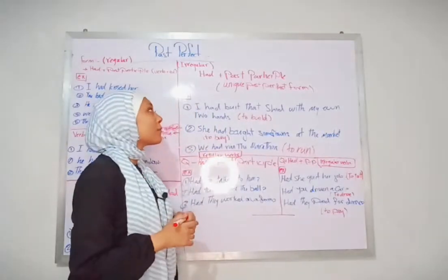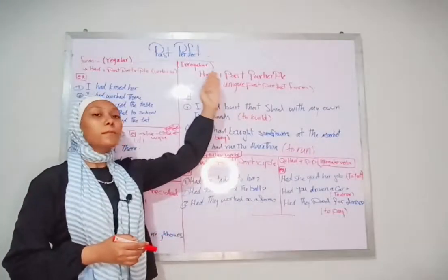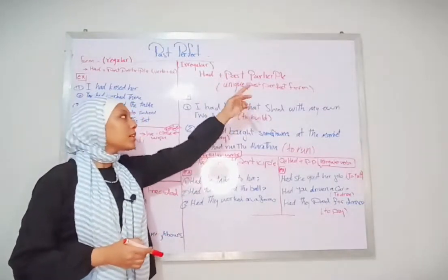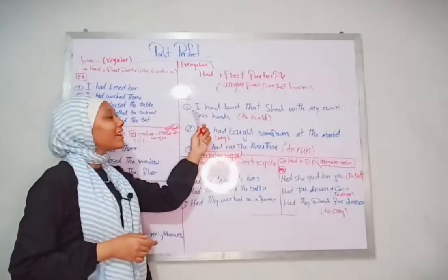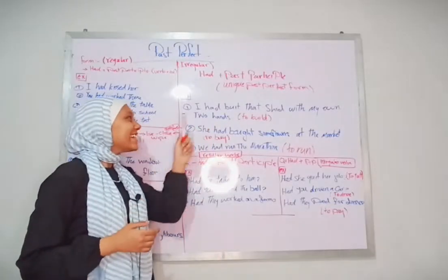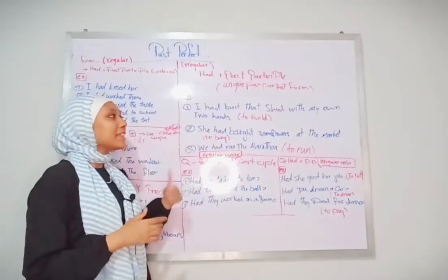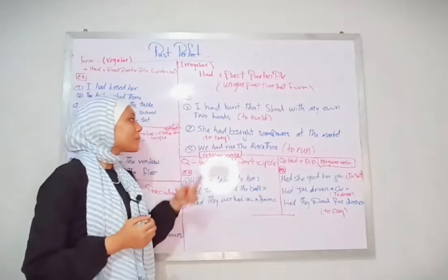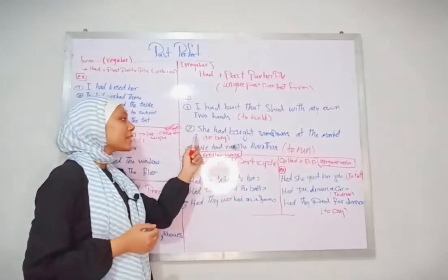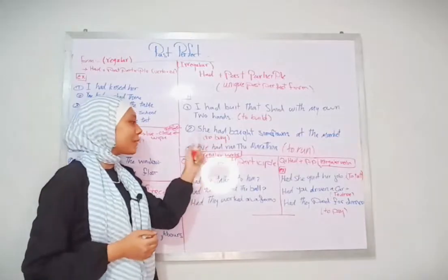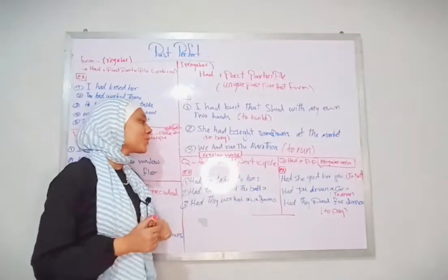Now let's have a look at irregular verbs. The structure is still had plus past participle, but the past participle has a unique form. Examples: I had built that shed with my own two hands — the infinitive form is 'to build'. She had bought some flowers at the market — the infinitive form is 'to buy'. We had run the marathon — the infinitive form is 'to run'.